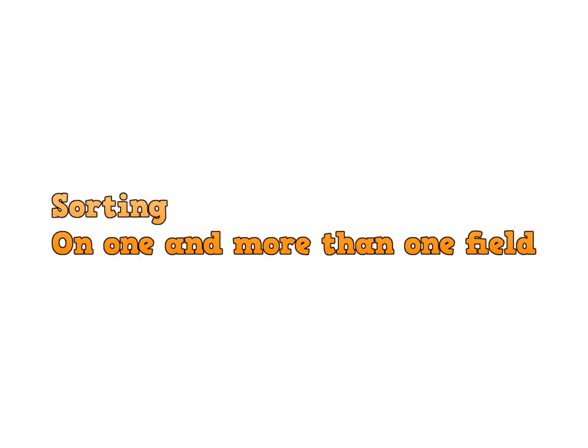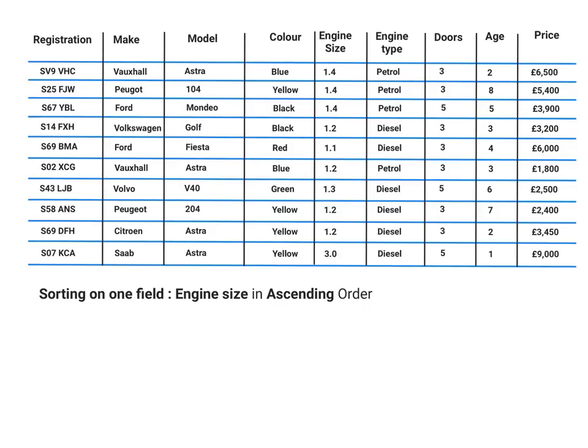Welcome to this video where we're going to look at how to recognise when a database has been sorted on one or more than one field. If we look at this unsorted database, you'll notice we've got a few fields: registration, make, model, etc. At the minute it's in an unsorted form.